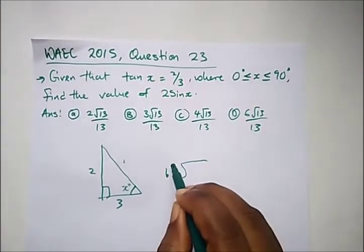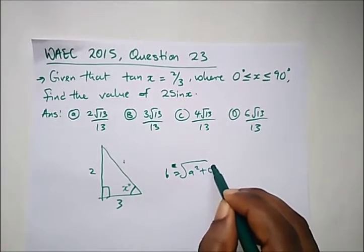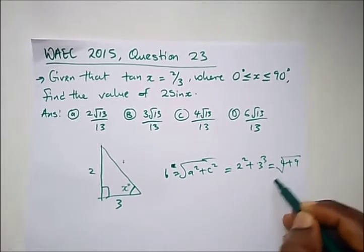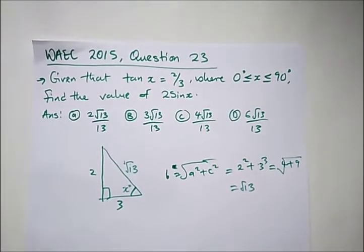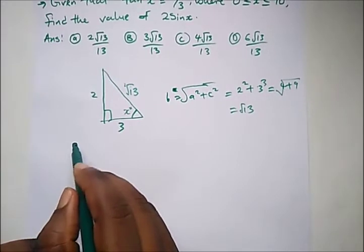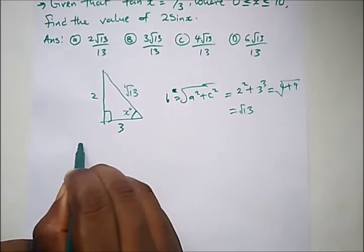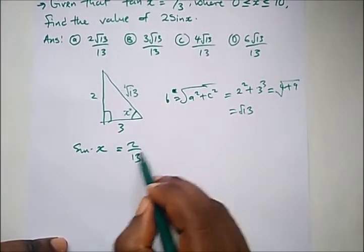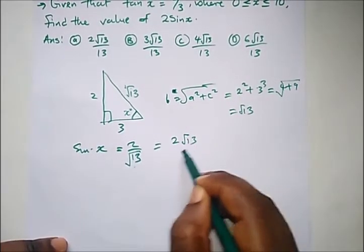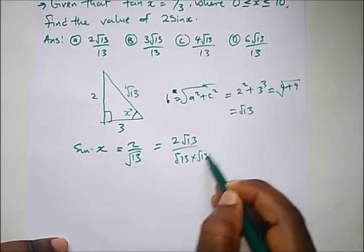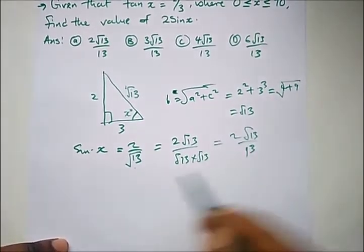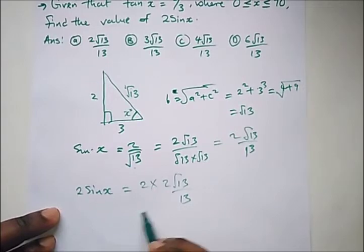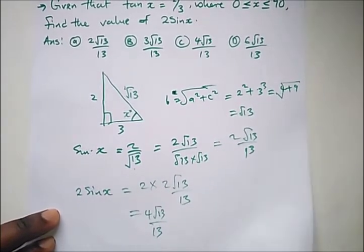To find the hypotenuse we apply the Pythagorean rule: hypotenuse equals root of (2 squared plus 3 squared), which is root of (4 plus 9), giving root 13. Now sin x is opposite over hypotenuse, which is 2 over root 13. Rationalizing gives 2 root 13 over 13. Since we want 2 sin x, we multiply by 2: 2 times (2 root 13 over 13) gives 4 root 13 over 13. The correct option is C.